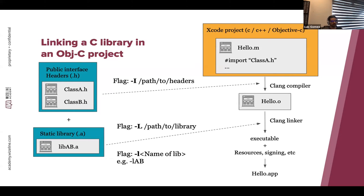Now that we added the flag, if we try to build again, the build keeps failing — but in this case it's a linker issue, not a compiler issue. With -I we tell the compiler that we can use a series of classes, methods, and properties defined in the header. But the one in charge of extracting the implementation from the library and inserting it into the final executable is the linker. At this point the linker doesn't know where your library is located or its name. For that we need two more flags: -L to tell the linker where the libraries are, and -l (lowercase) to specify the library name. After that we will be able to build the project, and Clang will create the executable.